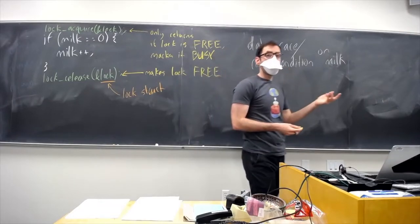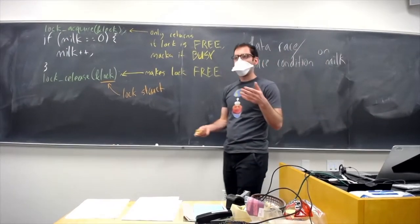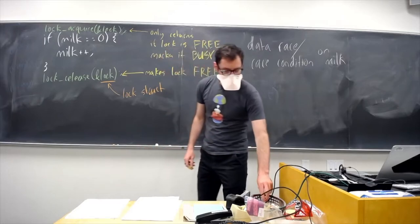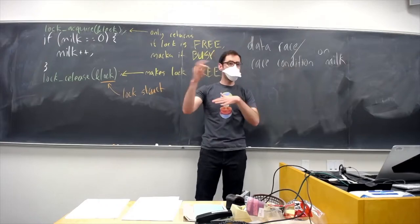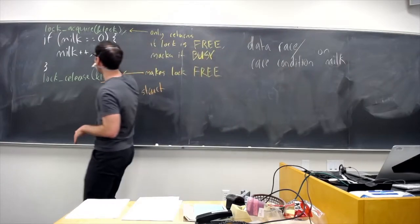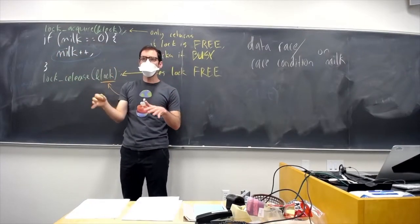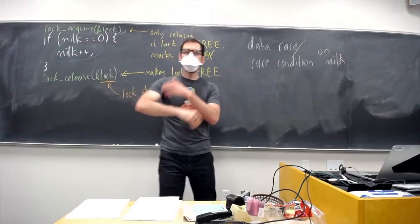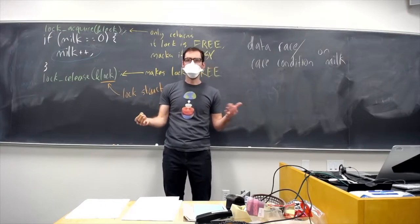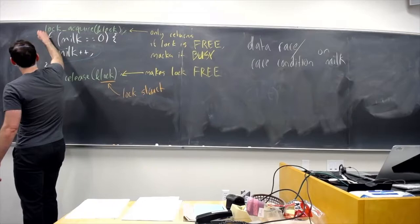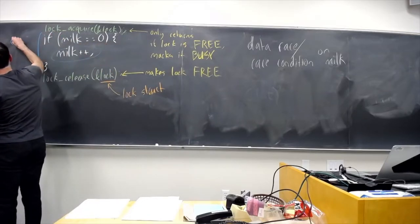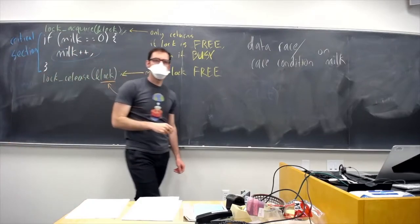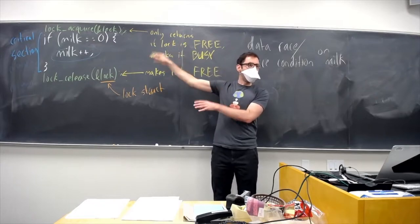A data race means that maybe your program works most of the time, but sometimes the way that threads get scheduled results in incorrect behavior. The region of the code where we have potential data races — where multiple threads are in particular writing our shared data — is called the critical section. If multiple threads were just reading the current value of milk but not changing it, we wouldn't have a problem since everyone would read the same value and it wouldn't matter which order they read it.